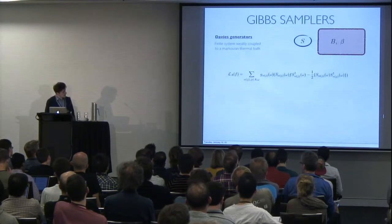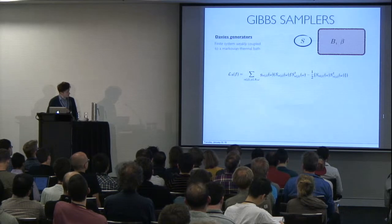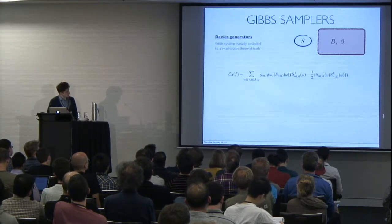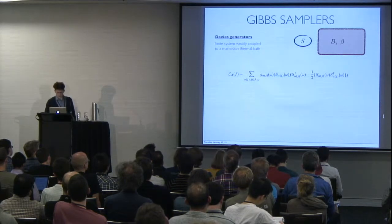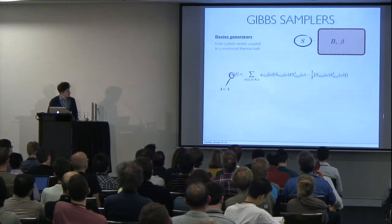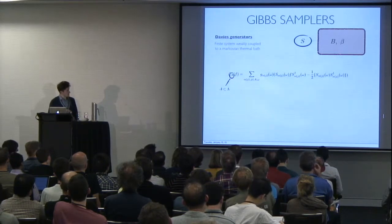Once you do this, you end up with a master equation, with a generator of a semi-group, which has all sorts of ugly terms that you don't have to pay too much attention to. But it's worth mentioning that these are properly defined for a subset of the lattice we're interested in.